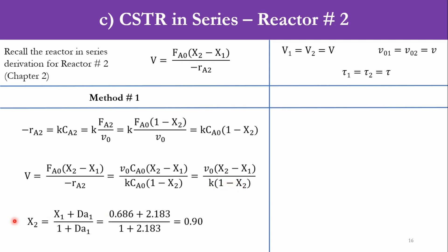And if we rearrange it, X2 is equal to X1 plus DA1. Now that DA1 is tau k over 1 plus DA1. Now we know DA1 from the previous slide, that is 2.183, X1 is 0.686. Accordingly, we get 90% conversion in the system.